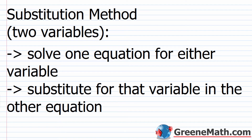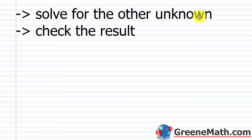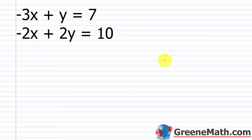Here's the official substitution method procedure for two variables: First, solve one equation for either variable — look for a coefficient of 1 or negative 1. Second, substitute for that variable in the other equation. Third, solve for the unknown. Fourth, plug that value back into either original equation to find the other unknown. Finally, check your result — the solution must work in both equations. Let's try another problem: negative 3x plus y equals 7, and negative 2x plus 2y equals 10.